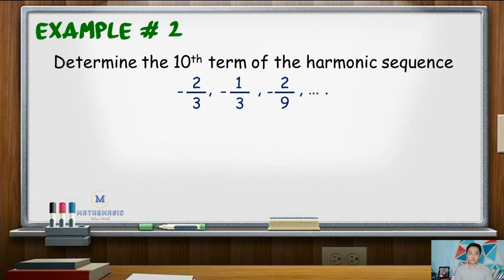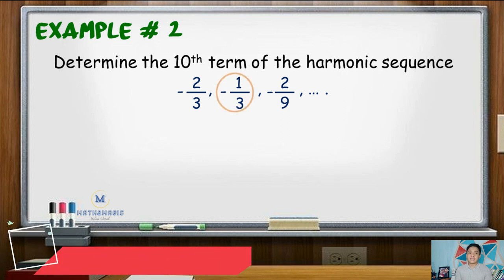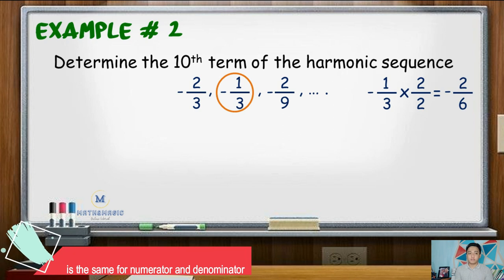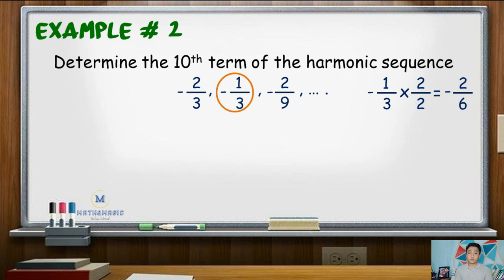Again, we need to make sure that all numerators are the same. So we will multiply the second term by 2, it will become negative 2 over 6. Here we will disregard first negative 2, since all the numerators are the same. We can now rewrite the denominators as an arithmetic sequence, 3, 6, 9, and so on.